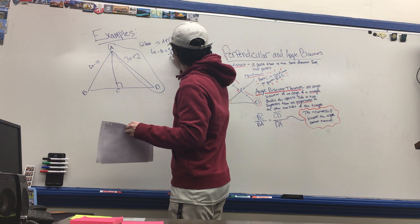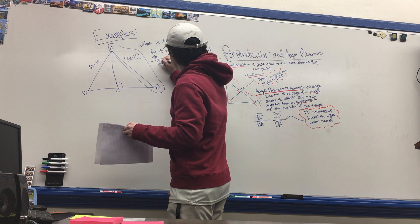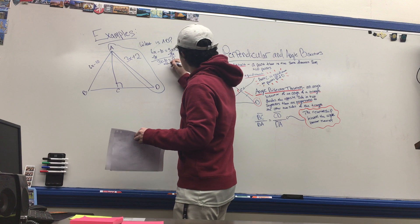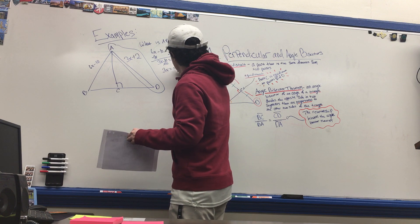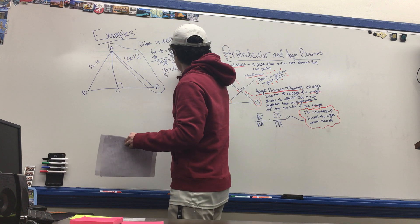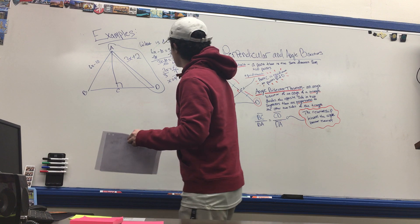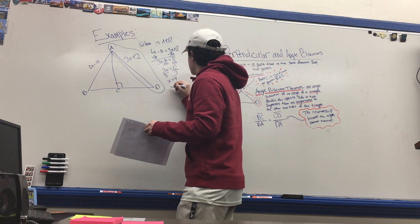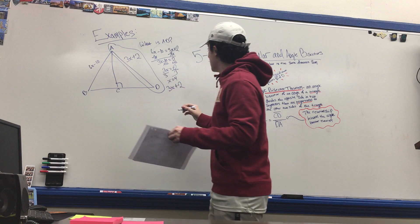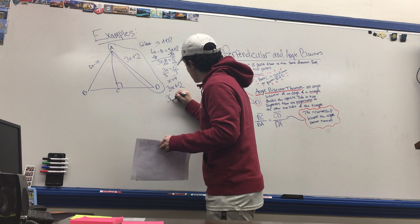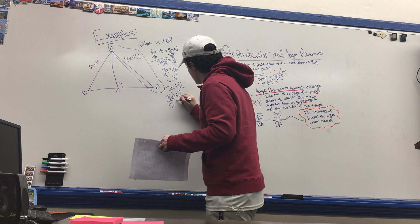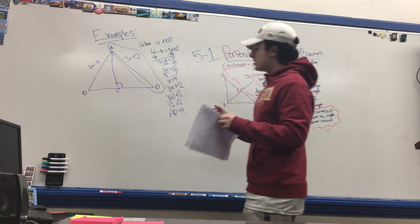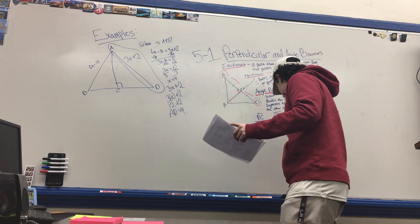We subtract 3x from both sides, giving us 3x minus 10 equals 2. Then we add 10 to both sides: 3x equals 12, so x equals 4. Now we plug x into the expression for AD, which is 3x plus 2: 3 times 4 is 12, plus 2 gives us AD equals 14.